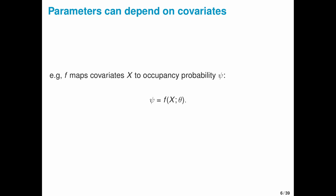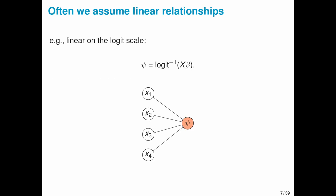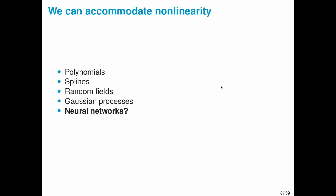In these models, parameters can depend on covariates. So we might have some function f that maps altitude, temperature, greenness, etc. to the probability of occupancy. And often we assume linear relationships, maybe on some transformed scale. So for an occupancy probability you might use an inverse logit transform and take a linear combination of our inputs x where beta is a parameter vector.